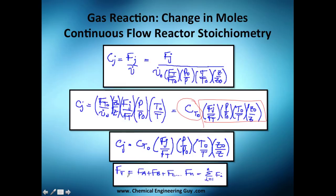This is valid for any species — A, B, C, D — the only thing that changes is the concentration of j and the molar flow of j. Everything else is fixed: the pressure is the same for all species, the temperature is the same, the compressibility factor is the same, and the initial concentration C_T0 is a constant. The total flow F_T is also the same; only F_j changes.